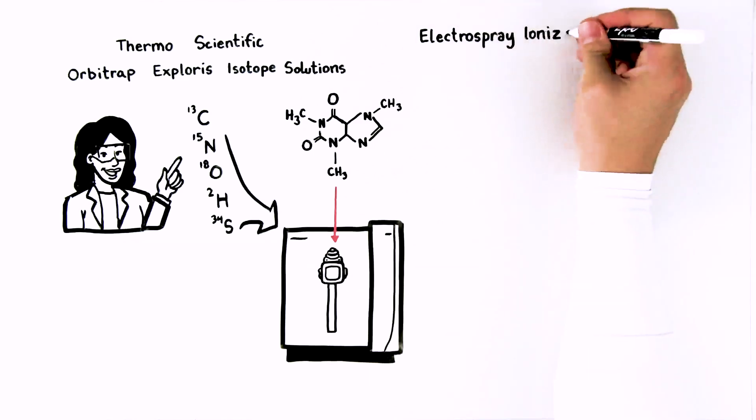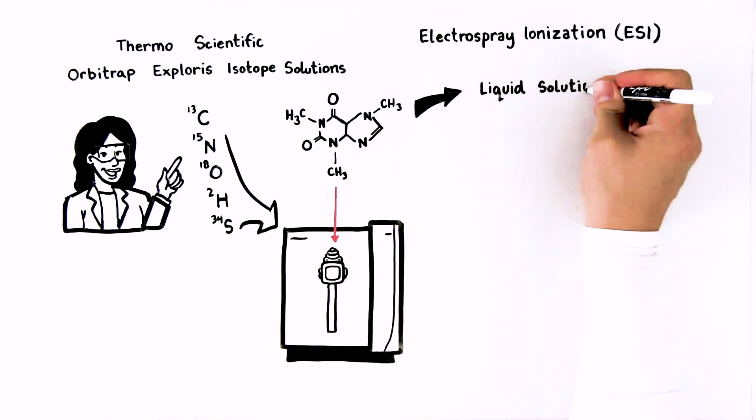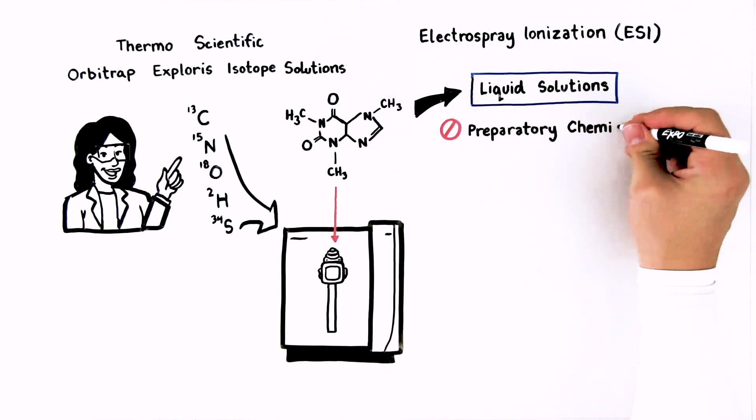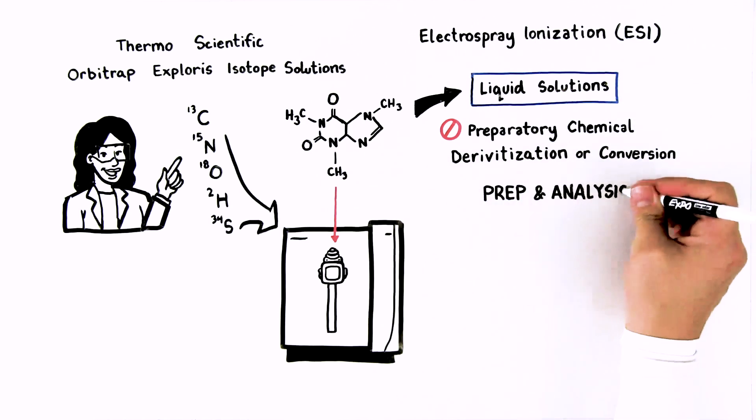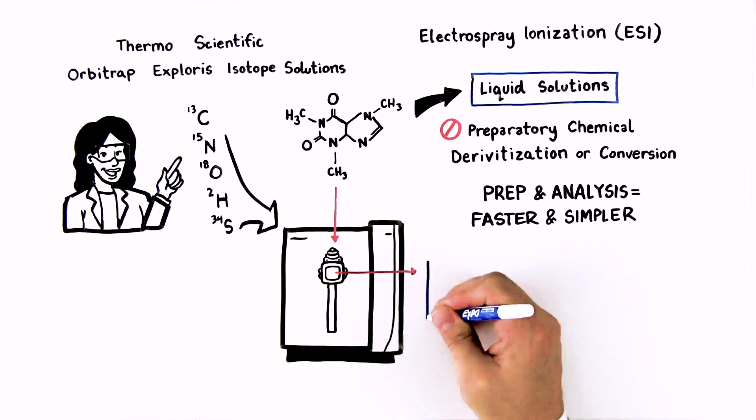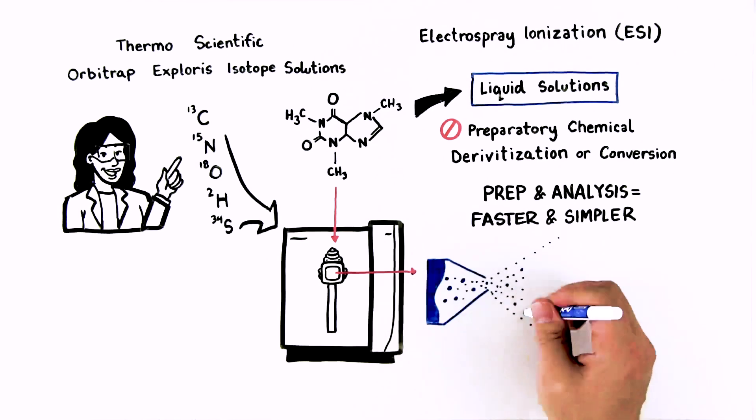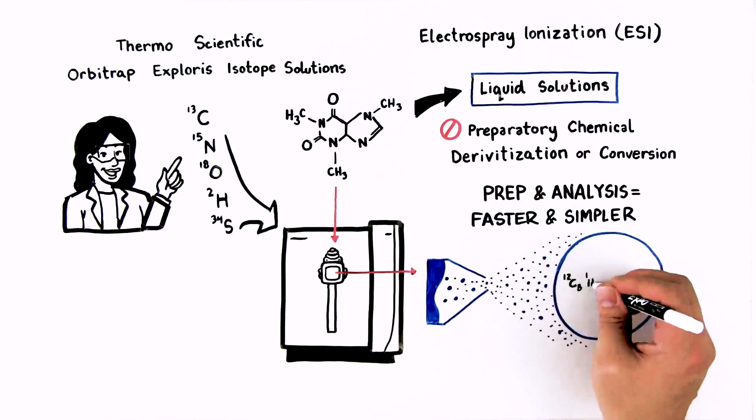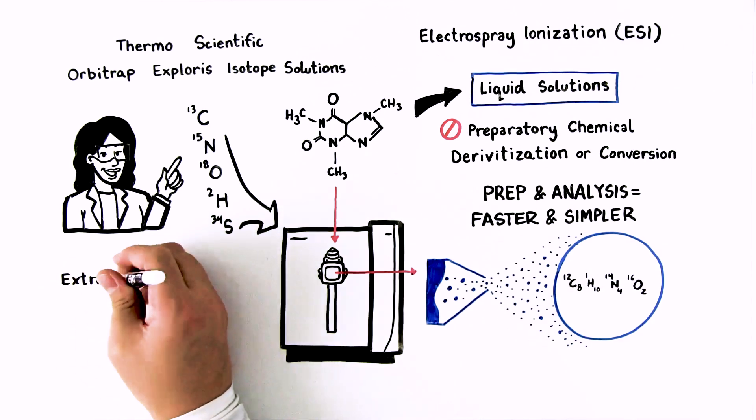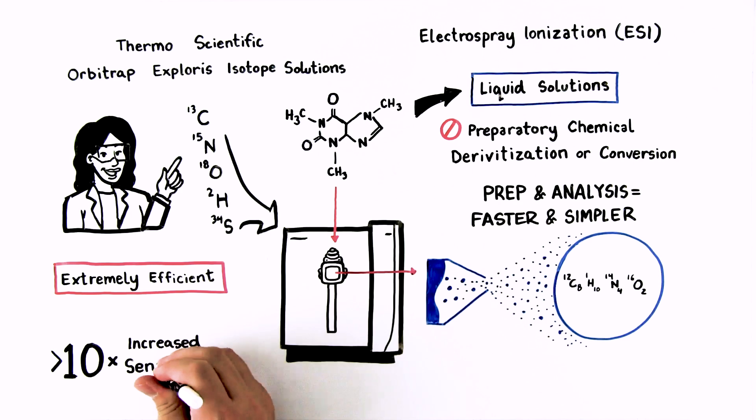Thanks to electrospray ionization, ESI, polar molecules can be introduced as liquid solutions without preparatory chemical derivatization or conversion, making preparation and analysis of samples faster and simpler. The principle of ESI includes dispersion of a fine spray of charged droplets, solvent evaporation, and transfer of gas phase intact molecular ions to the MS. This is an extremely efficient process resulting in more than 10 times increased sensitivity compared to classical approaches.